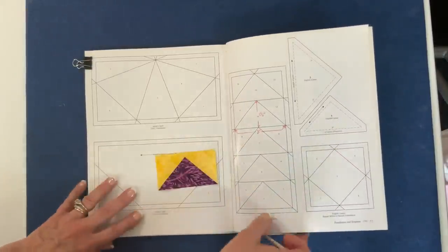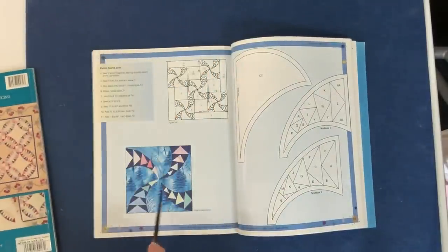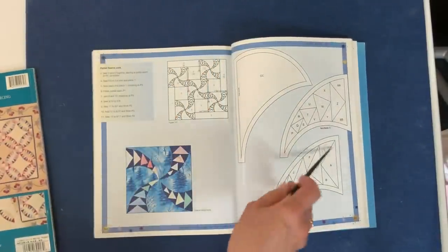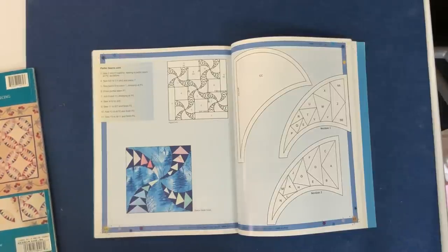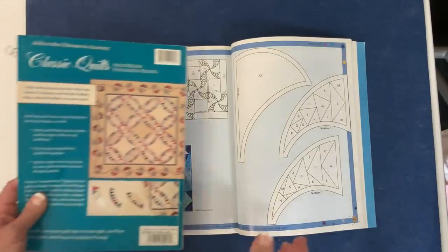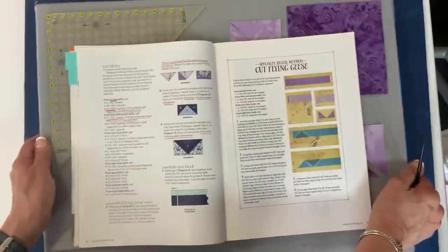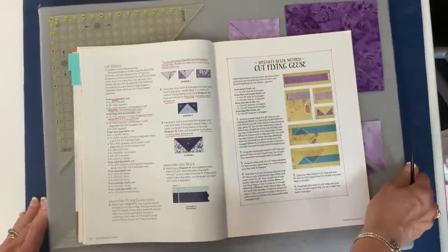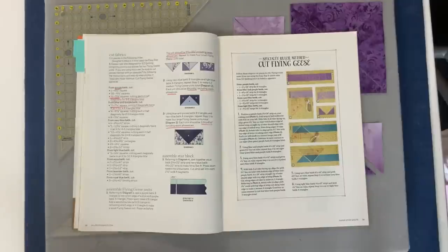Those will give me the finished sizes of the flying geese and that's what I need to know in order to be able to proceed forward and Tuckerize them using another method. Now there are times when you really must use paper foundation piecing. If you're doing something like this where the geese are kind of on a curve or in an unusual configuration, you're going to need to do paper foundation piecing. So I'm glad I know it, but if I have a choice I'll usually choose something different.